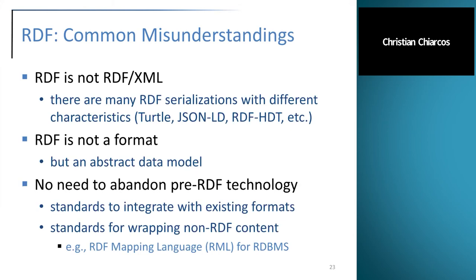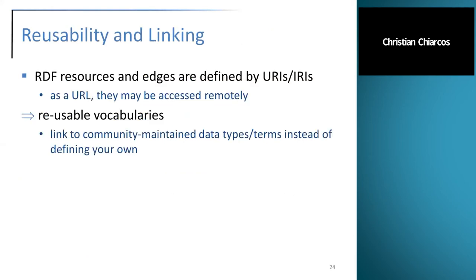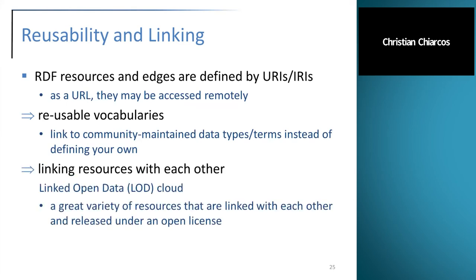Furthermore, there are standards for wrapping non-RDF content as RDF content — for example, the RDF Mapping Language allows you to provide an RDF view over a relational database. RDF has a number of interesting features that facilitate reusability and linking of resources. Because RDF resources and edges are defined by URIs, RDF can be accessed remotely if HTTP URLs are used. This allows reuse of elements — for example, developing vocabularies referred to from outside, so you don't have to define them within every individual data set. Another application is to provide links between different resources, stating that two entities are the same across those resources.